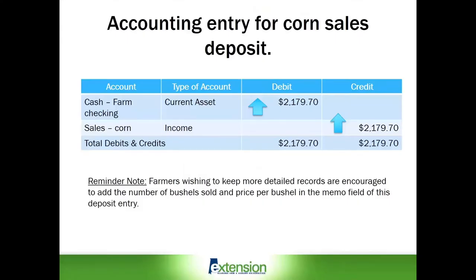Now let's take a look at the accounting entry, which is a simple one. In line 1, cash — farm checking — which is a current asset of the farm, is debited and increases by the amount of the bank deposit, $2,179.70. The offsetting entry is a sale account, which is an income account. In this instance, we are showing it as Sales Corn, an income account specifically for this farm, and it is credited for $2,179.70. Like all accounting entries, debit and credit entries must be in balance.